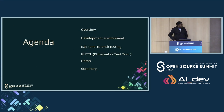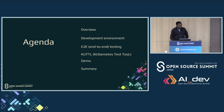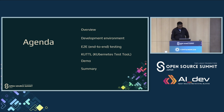A quick agenda: an overview of how a development environment would look like and the challenges we have faced in end-to-end testing, primarily on our developer machines, as well as introducing a tool called Cuttle — Kubernetes Test Tool — and a quick demo and summary.